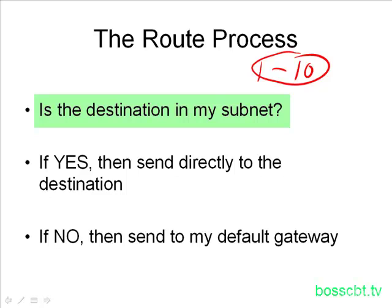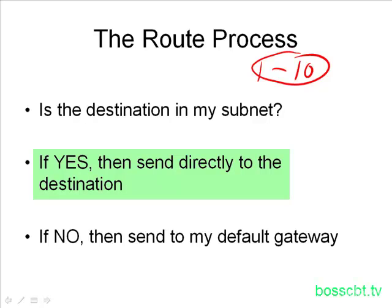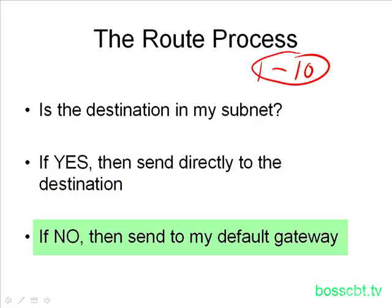The question is: is the destination in my subnet, or is it not in my subnet? And depending on the answer, the computer does a different action. If the answer is yes — the destination of the packet I want to send is in the same subnet — then I'm going to go ahead and send this directly to the destination. I figure out the Ethernet MAC address, put the IP packet into a frame, and send it on its way. However, if the answer is no — the destination IP address is in a different subnet — then the computer needs a little help, and it will send this packet to the default gateway to help get it there.